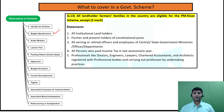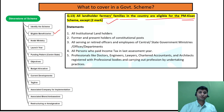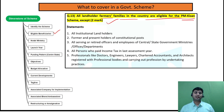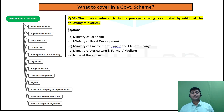Next — eligible beneficiaries. This is again one of the most common questions. For example, in the 2021 exam there was a question on PM Kisaan in which they asked: all landholder farmer families in the country are eligible for PM Kisaan scheme except — basically asking which of the following options is not eligible to take benefits under PM Kisaan. So eligible beneficiaries — who all are eligible to take benefits under a scheme — is very important to know.